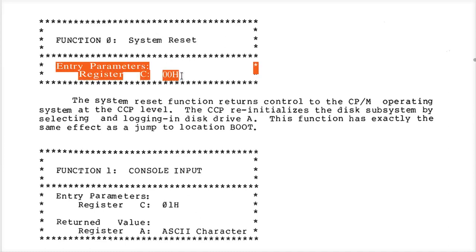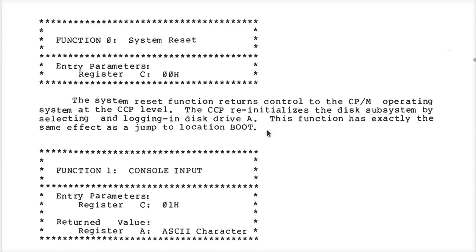The calling of the BDOS is the implied thing for every one of these functions — you do what it says for the entry, then you call to address 5. System reset function returns control to the CPM operating system at CCP level, re-initializes the disk subsystem by selecting login disk drive A. This function has exactly the same effect as jumping to location boot. I just jump to zero if I want to do that.